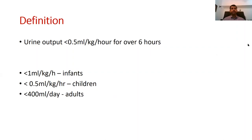So how do we define oliguria? The consensus is that urine output of less than 0.5 millilitres per kg per hour for more than six hours is considered a significant reduction in urine output and constitutes oliguria.